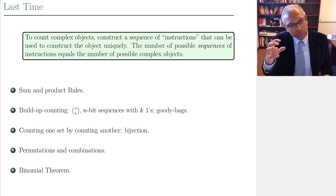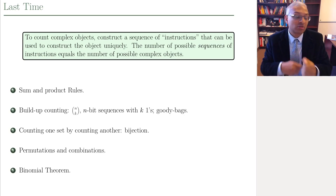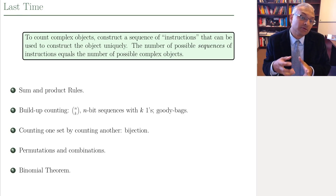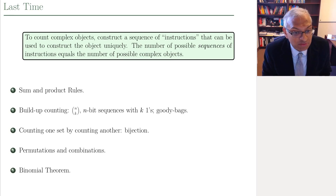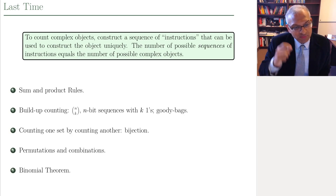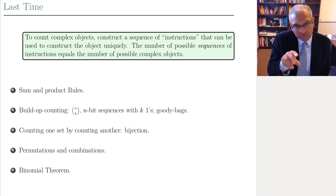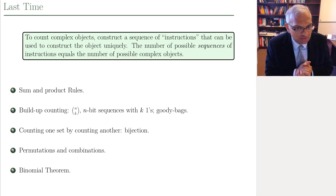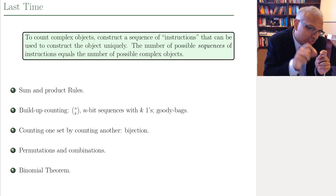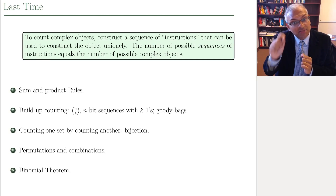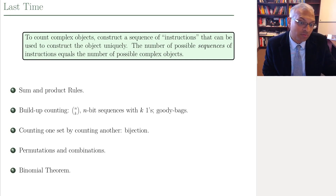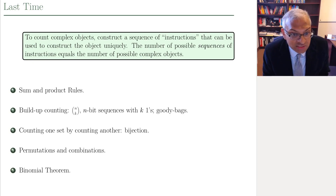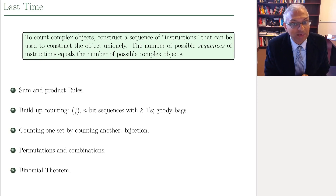We talked about build-up counting, where you build up to a complex problem by solving simple counting problems. We talked about bijection counting or one-to-one correspondence, where you can count one set by counting another set if you can establish a correspondence between those two sets. We ended with permutations and combinations, and n choose k — the number of n-bit sequences with k ones, and the number of ways to choose a subset of size k from a set of n objects. We gave a nice counting proof of the binomial theorem.